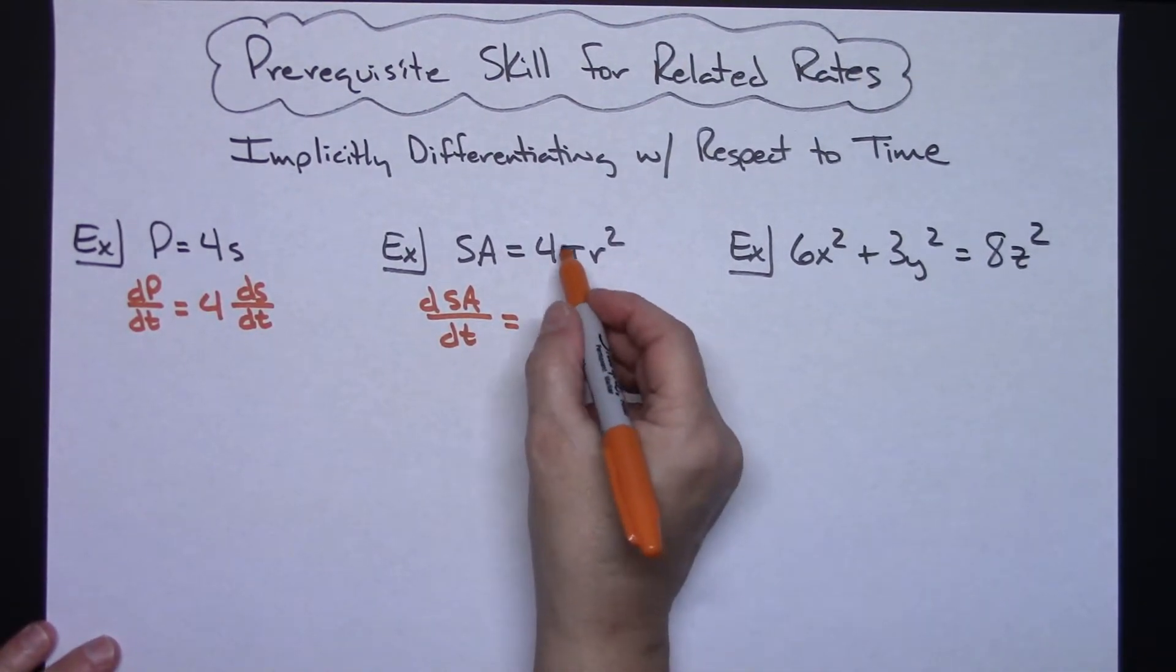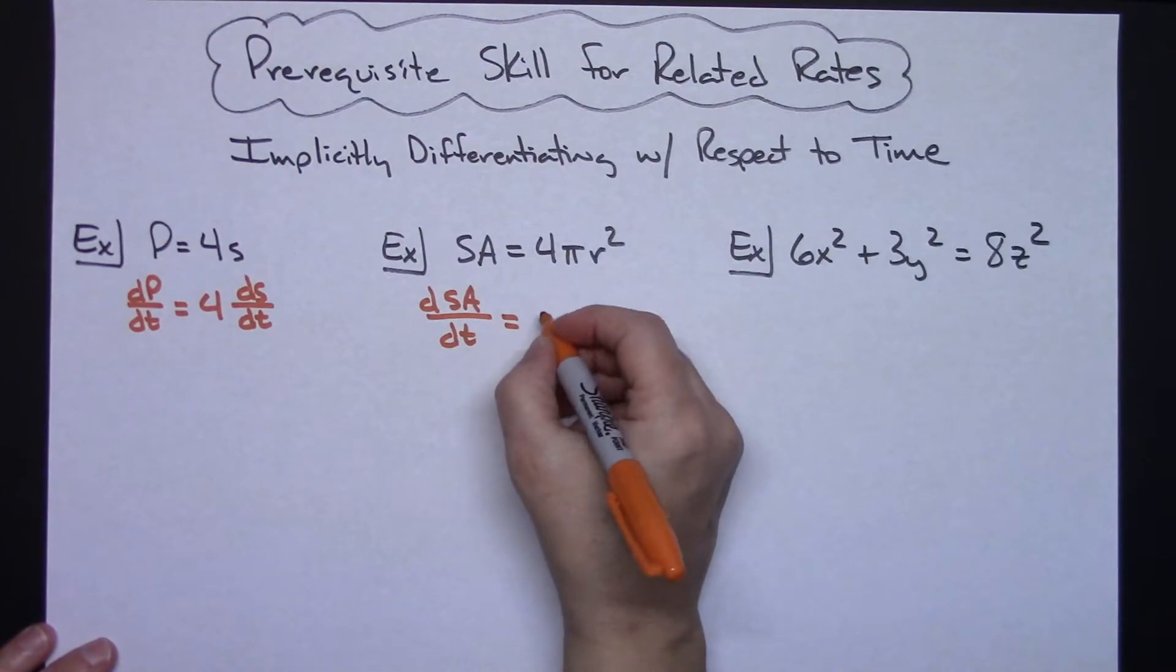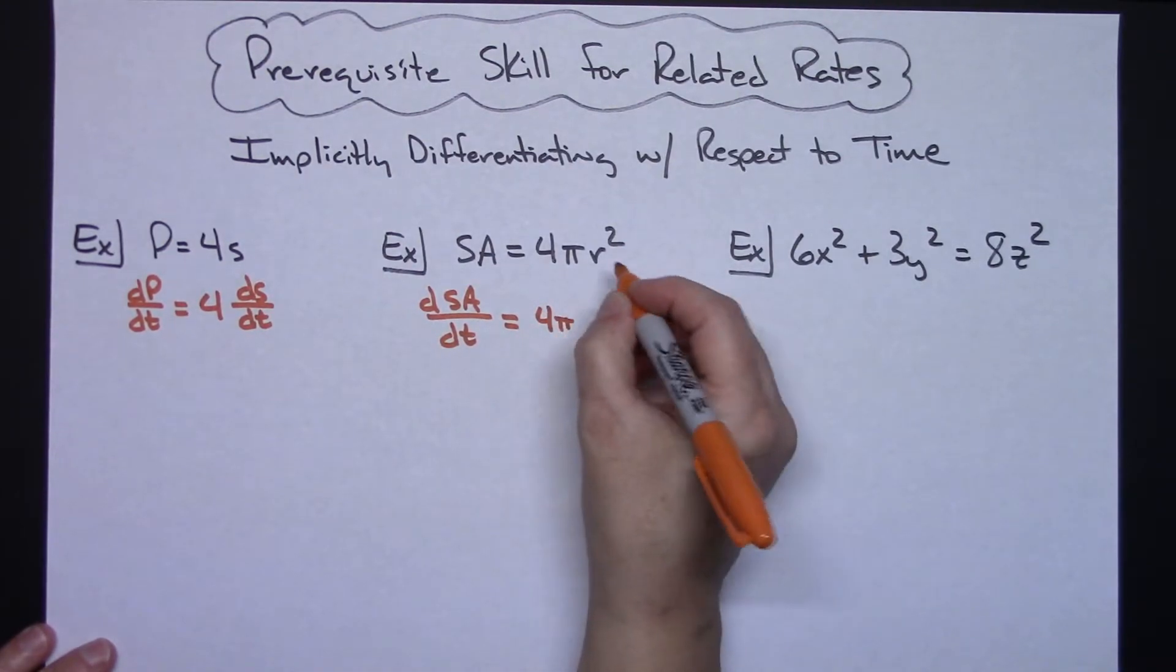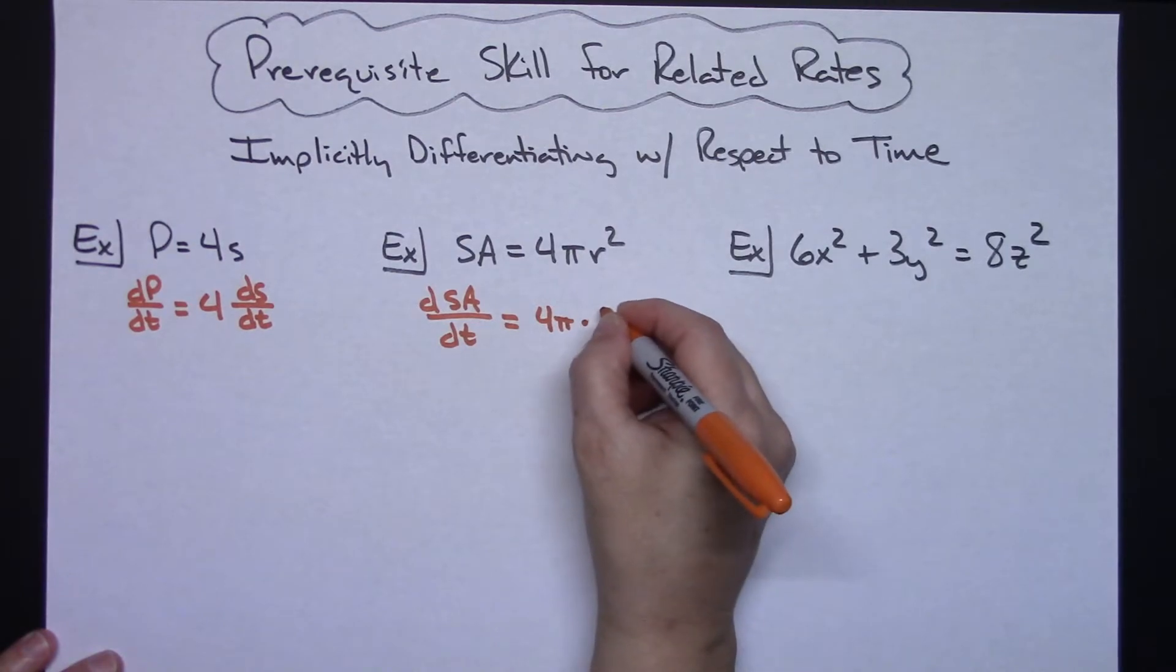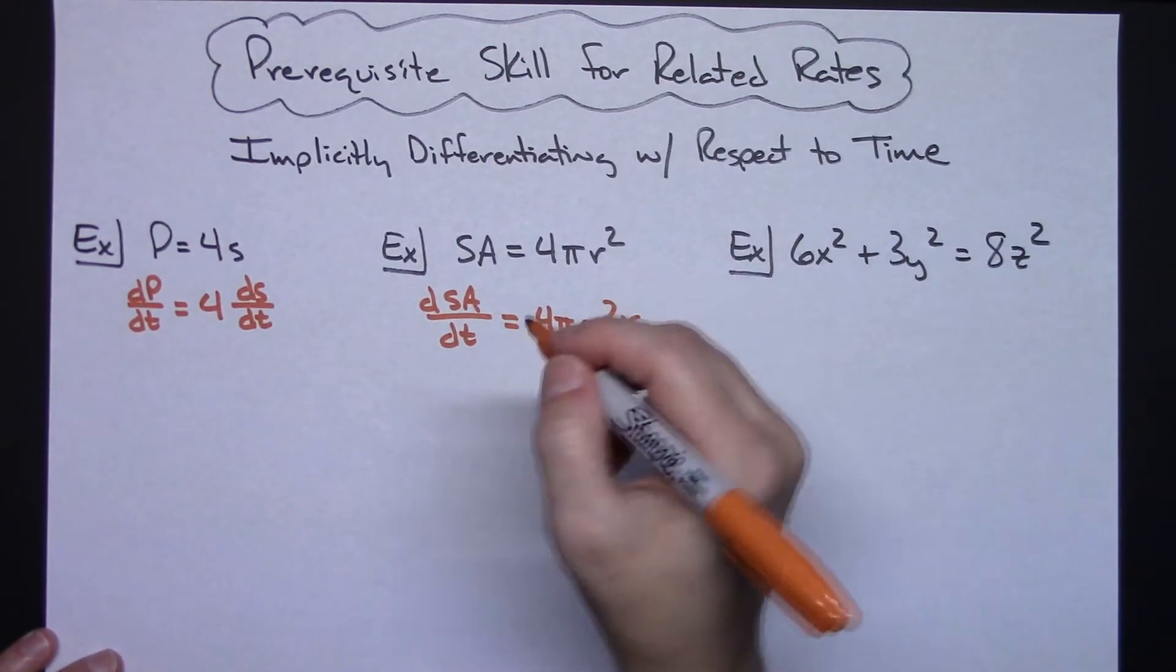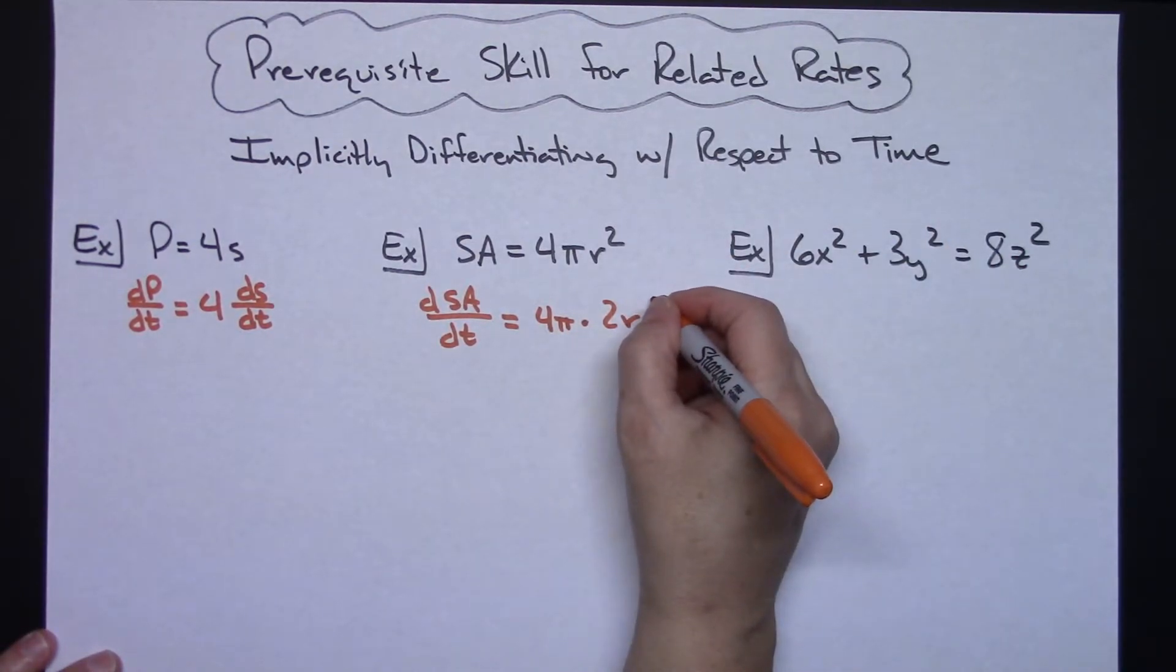Now on this one, the 4π is going to be a constant. I'm going to leave that out in front for just a moment. Let's just focus on doing the r². So that's going to be a 2r and then include the chain with respect to time, so dr/dt.